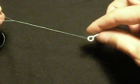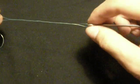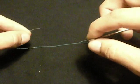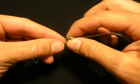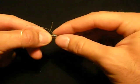At this point move up, grab the eye of your hook, take your tag end, pass it through the eye of the hook as you normally would for a normal cinch knot.